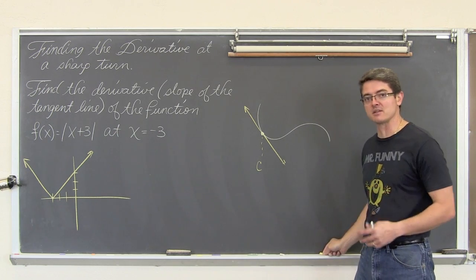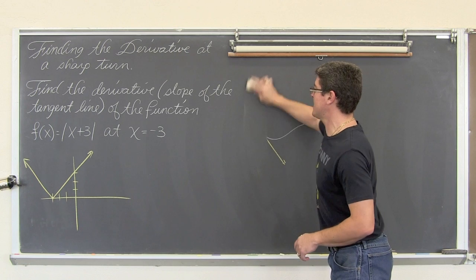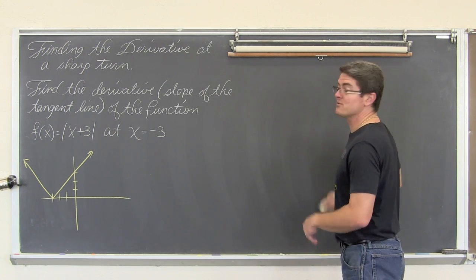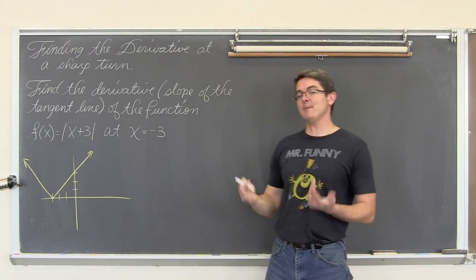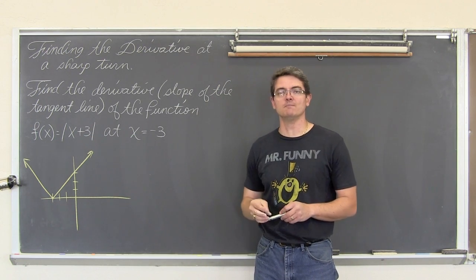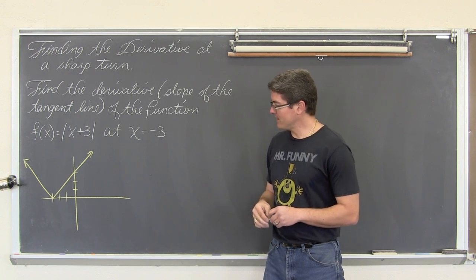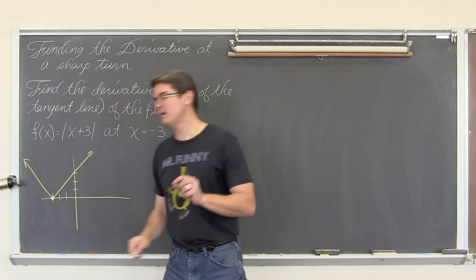We have done lots of problems like this now. I am sure you have in your homework. But in this particular question it says find the derivative, you know, the slope of the tangent line, of the function f(x) = |x+3| at x = -3. Well, here is negative 3, and it is a sharp bend.